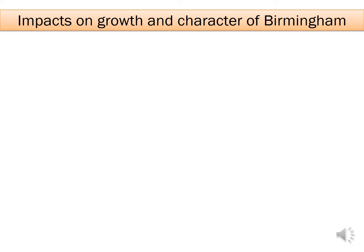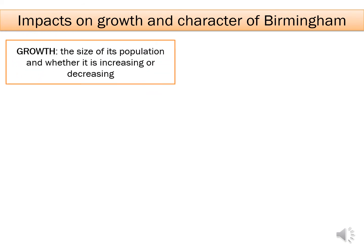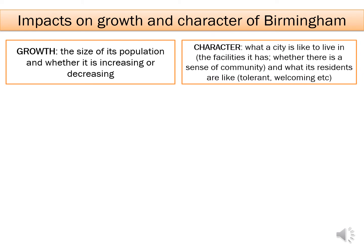Moving on to growth and character — these are two keywords you're going to hear a lot in the Birmingham topic. Growth simply means how migration affects the size of the population; if there is a lot of migration to Birmingham, this will impact growth. Character is how migration changes what the city is like to live in: what facilities it has, what sense of community there is, what the residents are like — are they tolerant, are they welcoming.